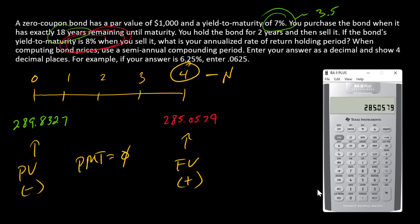That's going to give me a semi-annual discount rate. $289.8327 with a negative sign is PV, $285.0579 with a positive sign is FV, zero is payment, four is N, and compute i. So -0.4144%, that is a semi-annual realized return, a semi-annual holding period return.